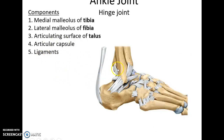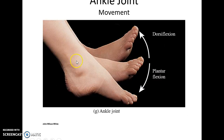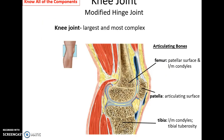The ankle joint is a hinge joint. The medial malleolus and lateral malleolus of the tibia and fibula articulate with the talus. There are many ligaments and an articular capsule, allowing for dorsiflexion and plantar flexion. Dorsiflexion is pointing your toes up; plantar flexion is pointing your toes down or stepping on your tiptoes.